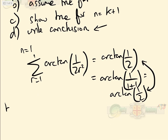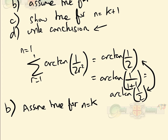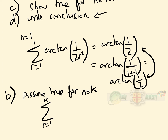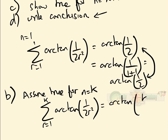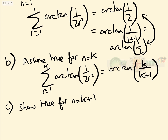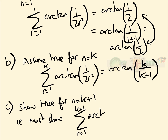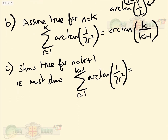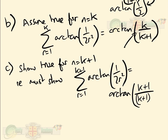Now for step B, we assume true for n equals k: that the sum from r equals 1 to k of arctan of 1 over 2r squared equals arctan k over k plus 1. For step C, we must show it's true for n equals k plus 1, i.e. that the sum from r equals 1 to k plus 1 equals arctan of k plus 1 over k plus 2. It's worth keeping in mind where we're trying to get to.